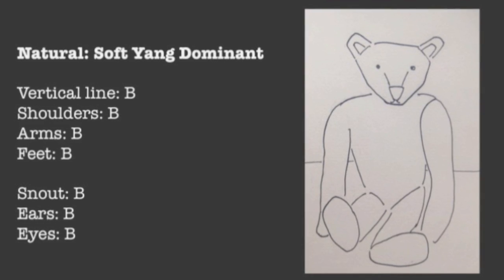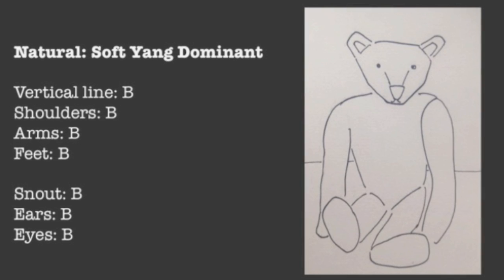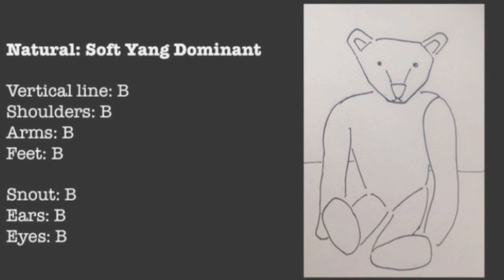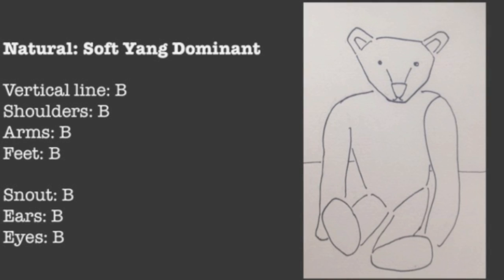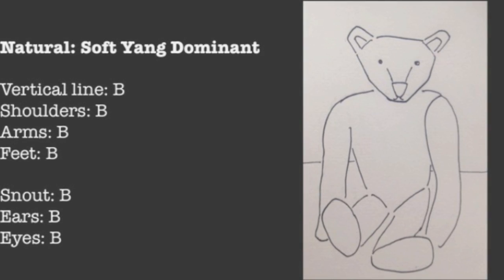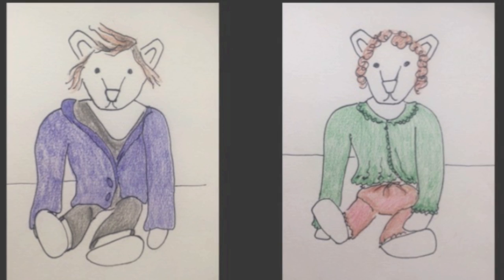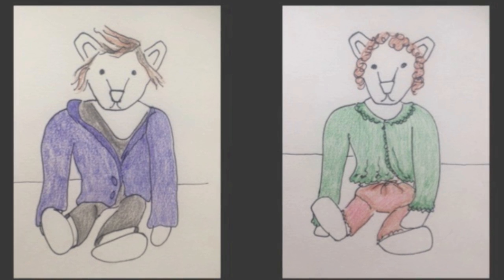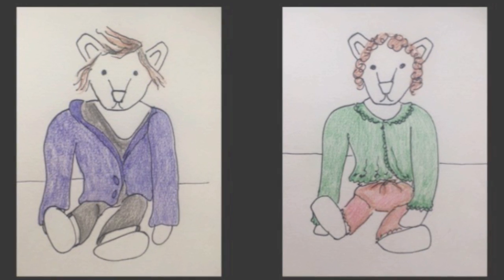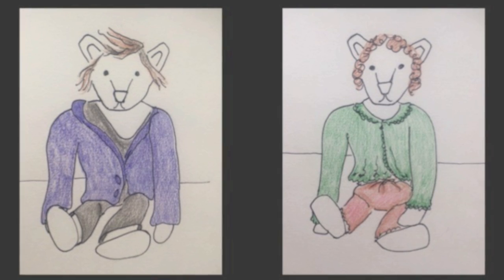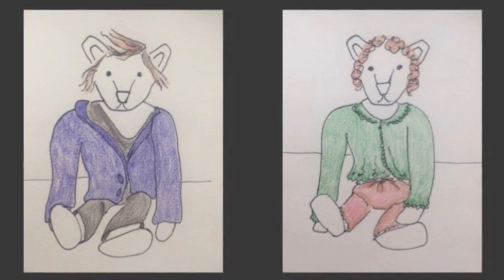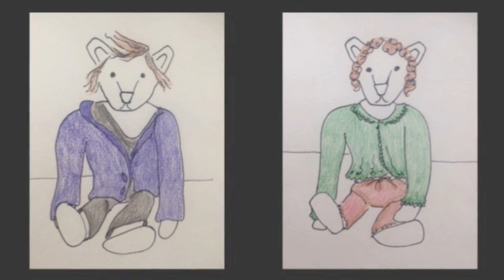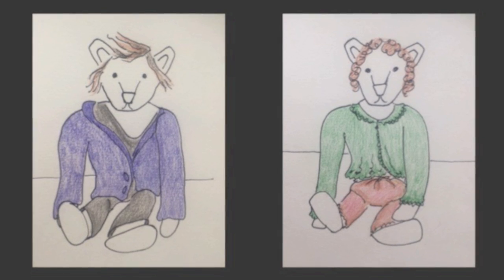Now we have a natural teddy bear. He is soft yang dominant, so you can see the width in his shoulders. His arms and legs are a bit longer but also a bit wider, and his ears and snout are bluntly angular - not sharp, but a little bit wide and angular. He looks amazing in an unconstructed sweater with free-flowing hair on the left, which really brings out his unique look. The frilly look on the right looks a bit too separate from him.